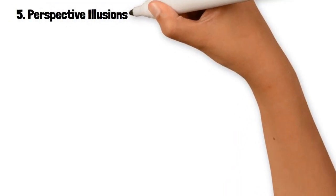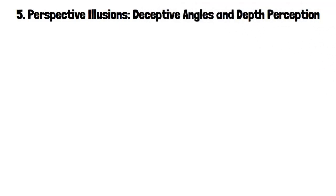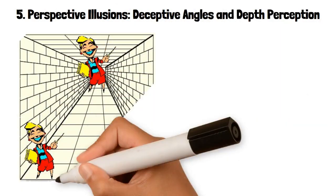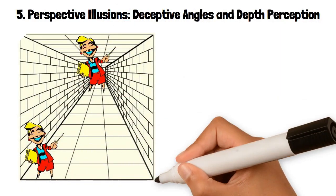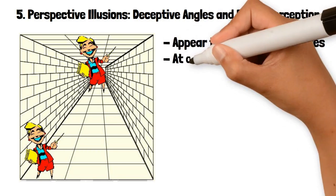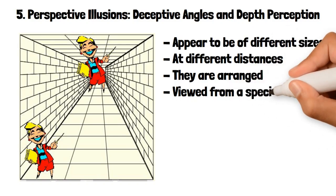5. Perspective Illusions: Deceptive Angles and Depth Perception. Perspective illusions exploit the way our brains interpret depth and spatial relationships based on visual cues. These illusions often involve objects that appear to be of different sizes or at different distances due to the way they are arranged or viewed from a specific angle.